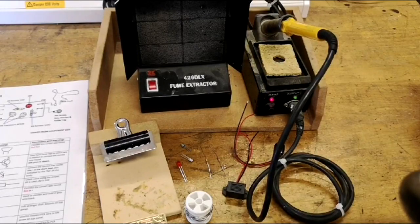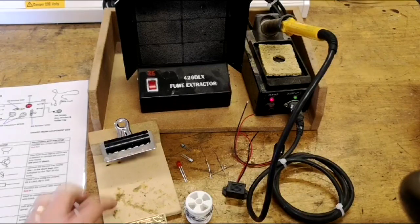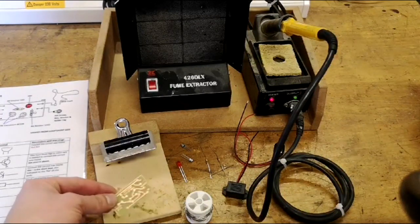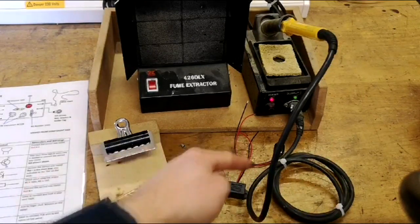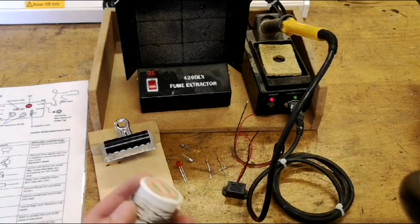Now we need to begin to solder our circuit together. In front of me you can see most of the things that we'll require: a circuit board, a range of electronic components, and a spool of solder.